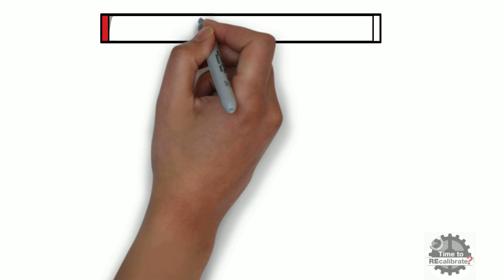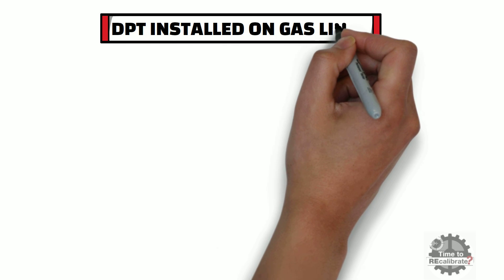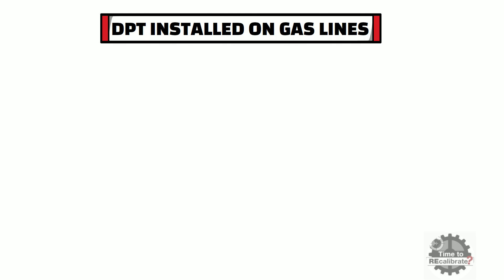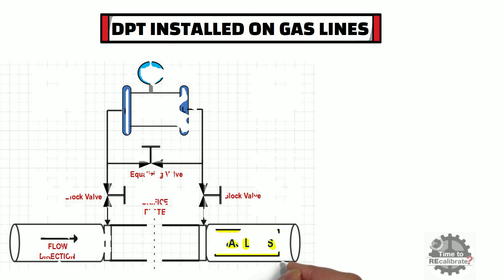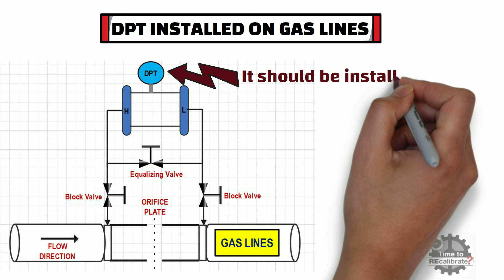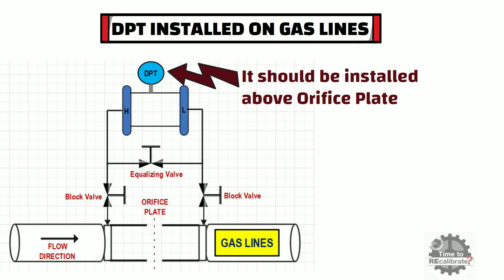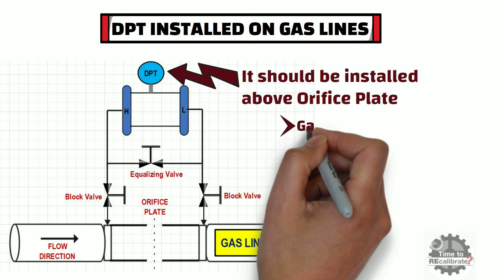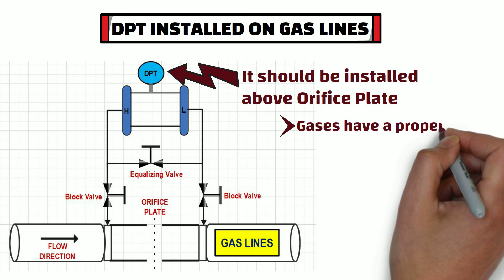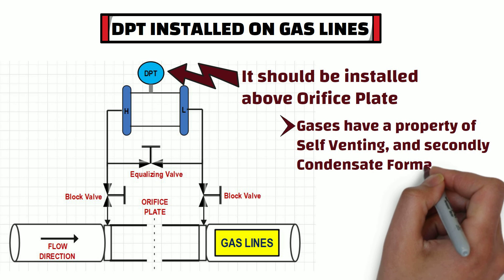Now let's take a situation when the differential pressure transmitter is installed on gas lines. As you can see from the diagram, for gas lines, the DP transmitter should be installed above the orifice plate. The reason behind this is that gases have a property of self-venting, and secondly, to avoid condensate formation.